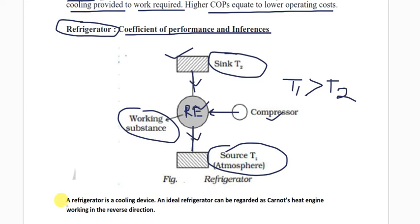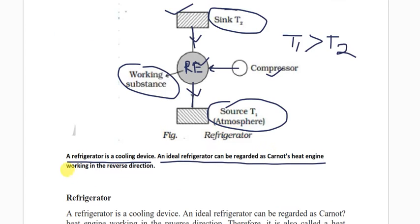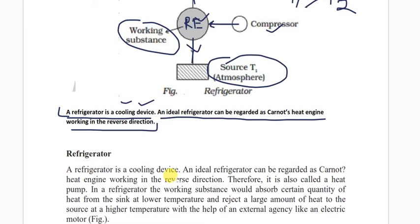A refrigerator is a cooling device. An ideal refrigerator can be regarded as a Carnot heat engine working in the reverse direction. Therefore, it is also called a heat pump.